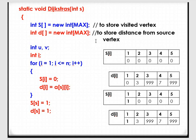The second array, D, stores the distance from the source vertex to all other vertices — for example, from 1 to 2, from 1 to 3, from 1 to 4, and from 1 to 5, what is the distance? In order to store that, we are using the array D. U and V indicate the edge between two vertices.